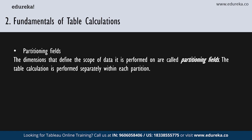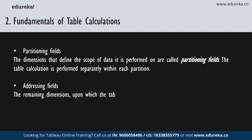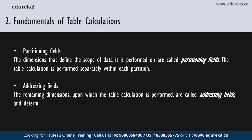The remaining dimensions upon which the table calculation is performed are called addressing fields. These determine the direction of the calculation. The direction of the calculation is slightly tricky to understand, which we shall also cover in the later part of this tutorial. Basically, it is the direction in which the calculation moves. For example, in calculating a running sum, that direction is determined by addressing fields. When you order the fields in the specific dimension section of the table calculation dialog box from top to bottom, you're specifying the direction in which the calculation moves through various marks in the partition.